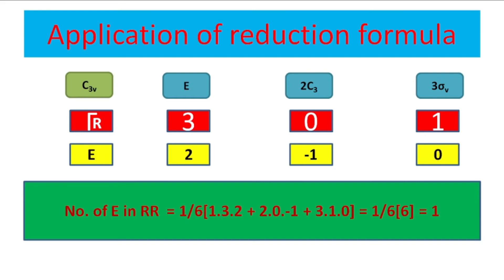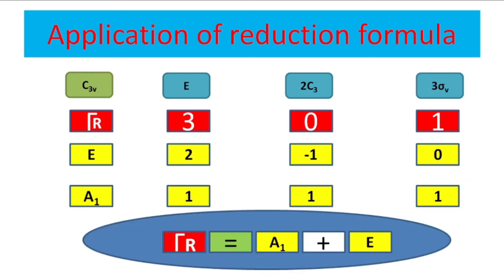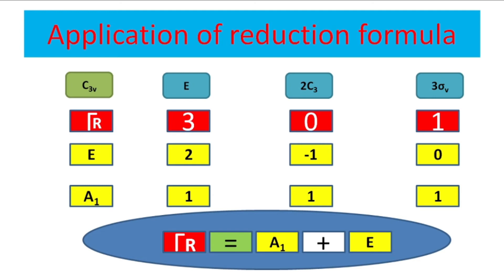Now for the two-dimensional irreducible representation E: the number of times E occurs equals 1 upon 6 into (1 into 3 into 2) plus (2 into 0 into minus 1) plus (3 into 1 into 0). The summation is 6, so 6 divided by 6 equals 1. E occurs one time. In conclusion, the reducible representation for C3v is made up of two irreducible representations: A1 and E.